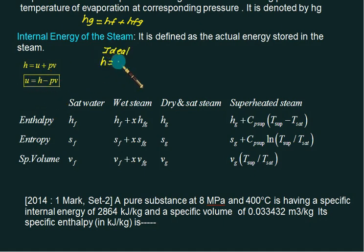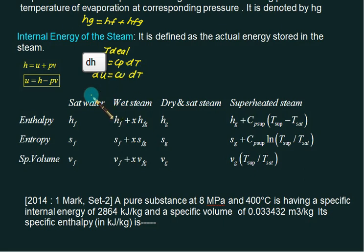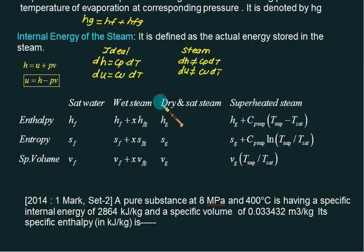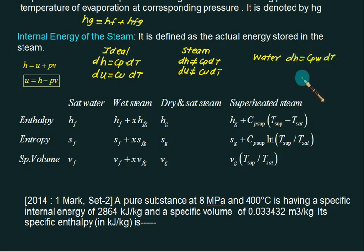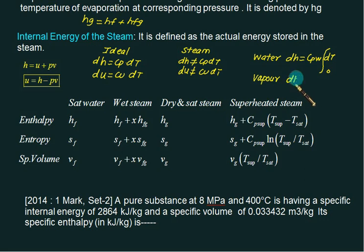Note a slight deviation from ideal gas: for an ideal gas, dh = cp·dT and du = cv·dT. These equations are not applicable for steam. Only for sensible heat with a single phase can we apply dh = cp·dT. For superheated steam, we write dh = cp_vapor × ∫dT from T_sat to T_sup.